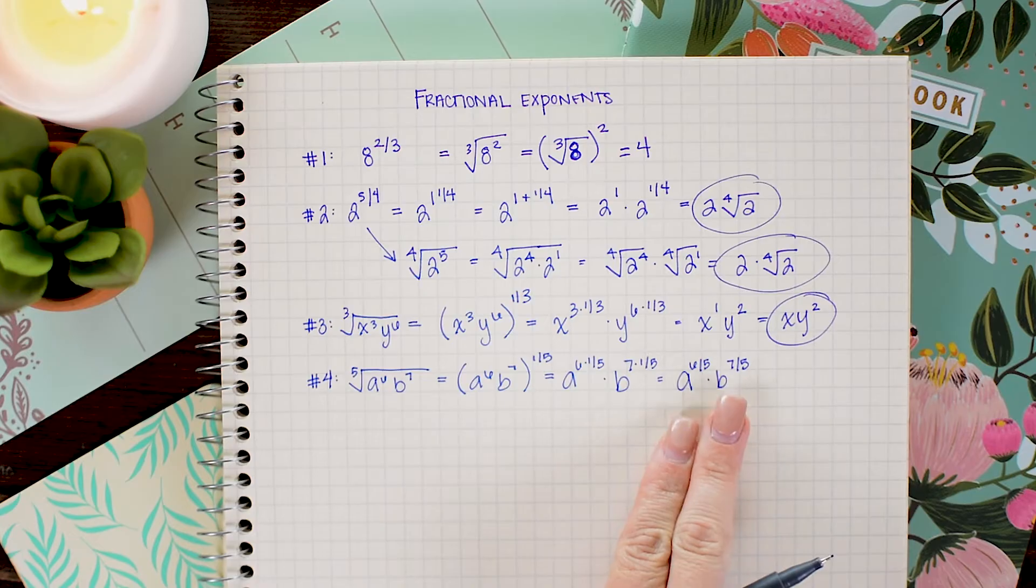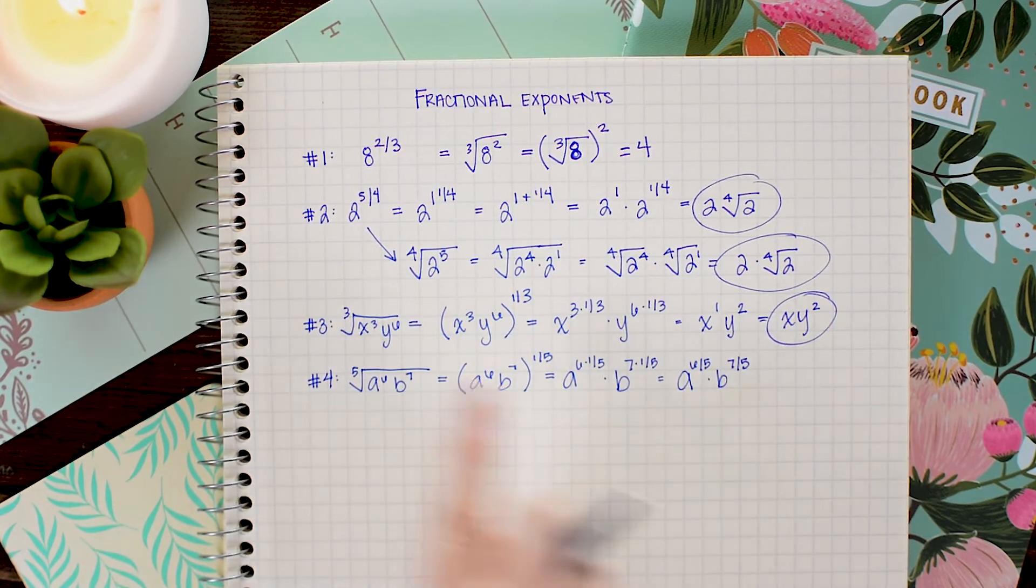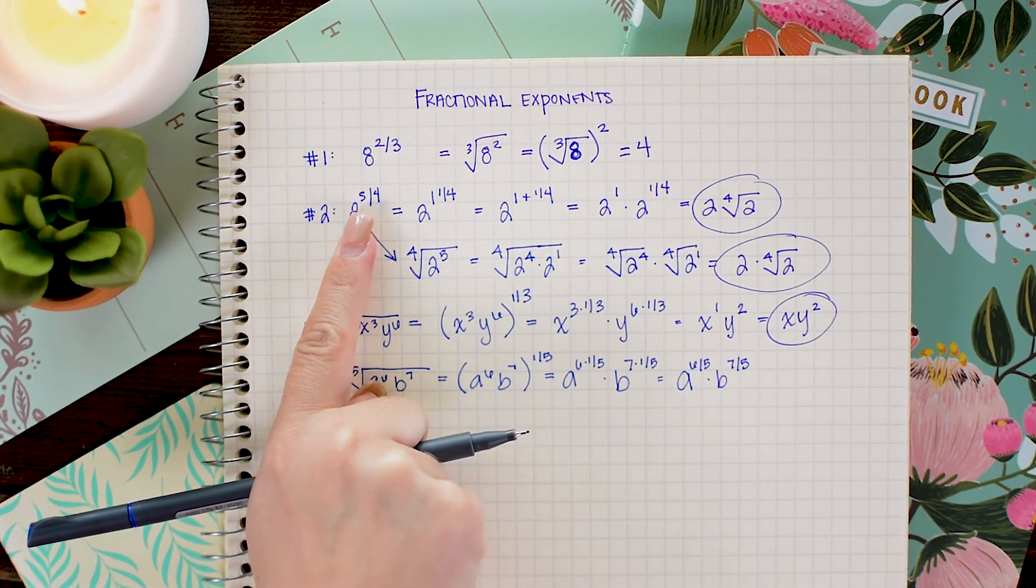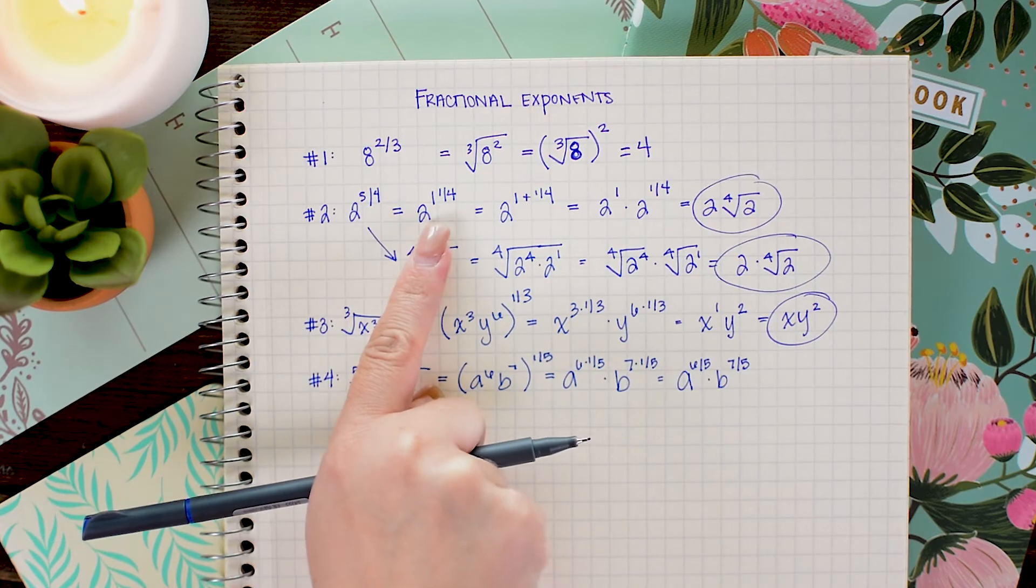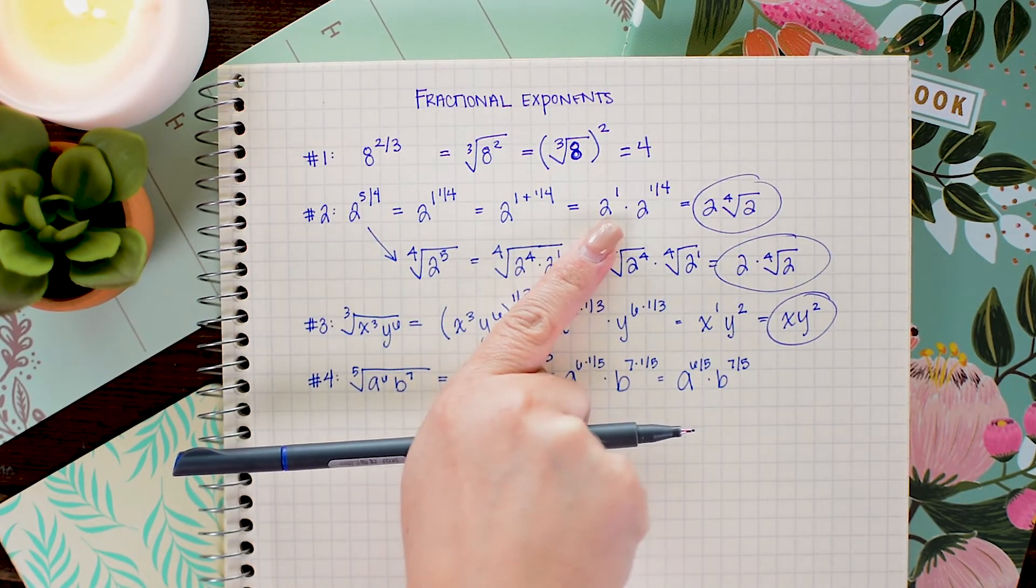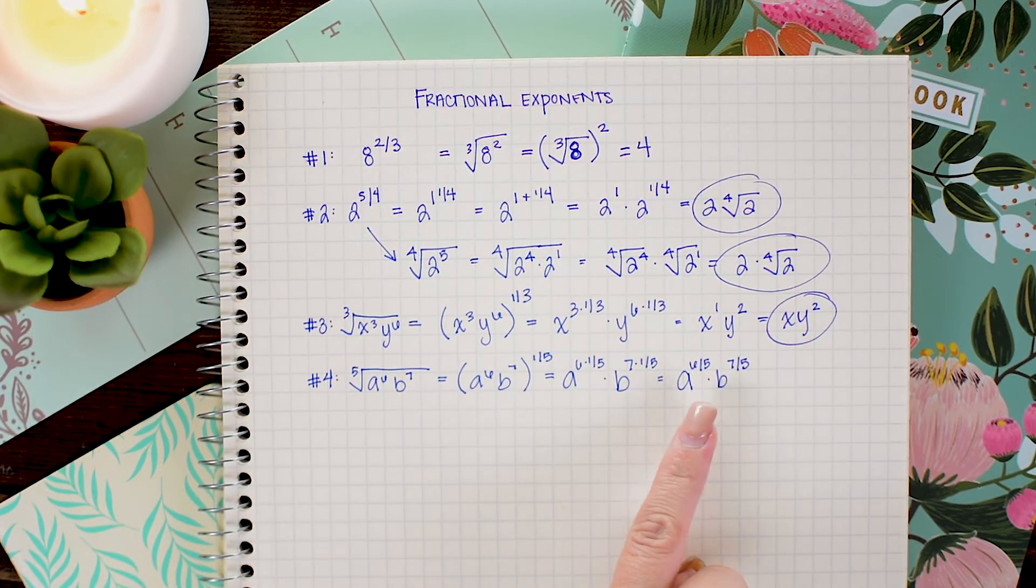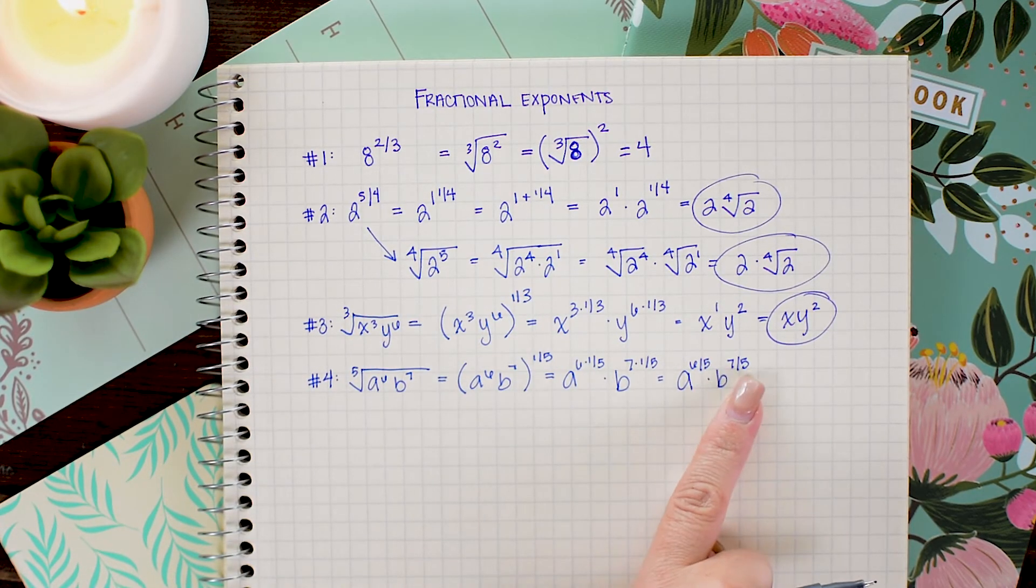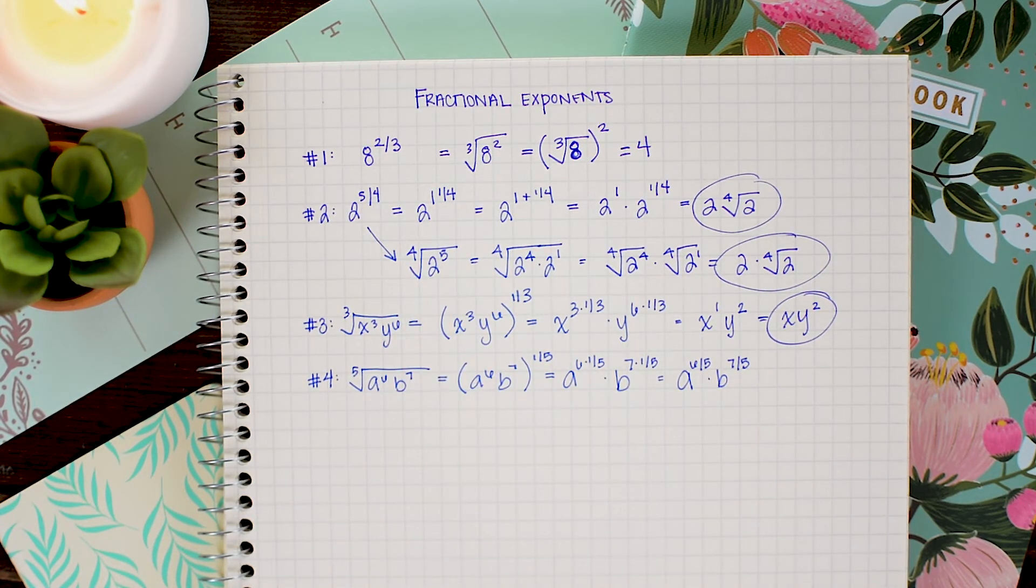And here I can use this same technique that we used in problem 2 where I took the improper fractions and just split it out into mixed numbers to pull out the whole number coefficient. So because 6 fifths and 7 fifths are both improper fractions we can just use that exact same technique.